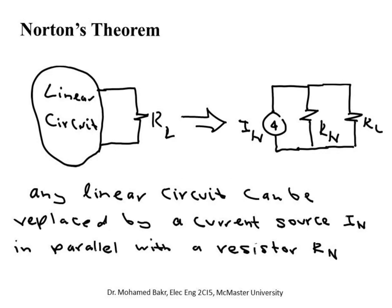The basic concept in Norton's Theorem is that if you have a linear circuit — which can have many components, all types of sources, and so on — then between any two terminals, looking into the circuit from the side of the load, we can replace the whole circuit with a current source in parallel with a resistance R_N. We call this I_Norton, the Norton current source, and R_N the Norton resistance. The current flowing in the load resistor is simply a current division: I_N multiplied by R_N over (R_N + R_L).